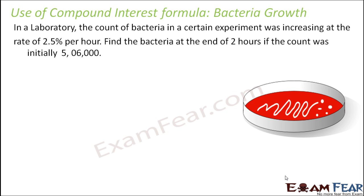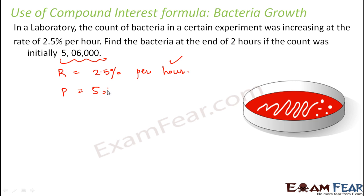The compound interest formula can also be used to find the number of bacteria in a bacterial growth culture. In a laboratory, the count of bacteria in a certain experiment was increasing at the rate of 2.5% per hour. Find the bacteria at the end of two hours if the count was initially 5,06,000. The rate is increasing at 2.5% per hour — note that this time it is per hour, not per year. The time period for which you need to calculate is 2 hours.